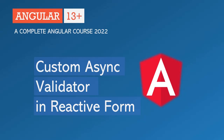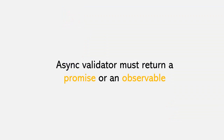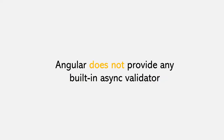In the last lecture, we learned how to create a custom validator in Angular. Now in this lecture, you are going to learn what is an async validator and how to create and use it. Creating an async validator is very similar to creating a sync validator. The only difference is that an async validator must return either a promise or an observable. And remember that Angular does not provide any built-in async validators.